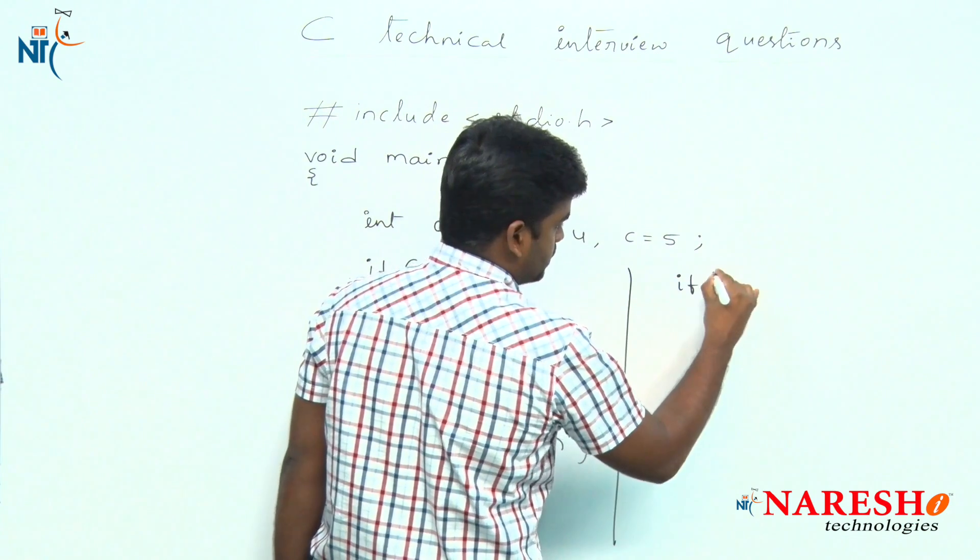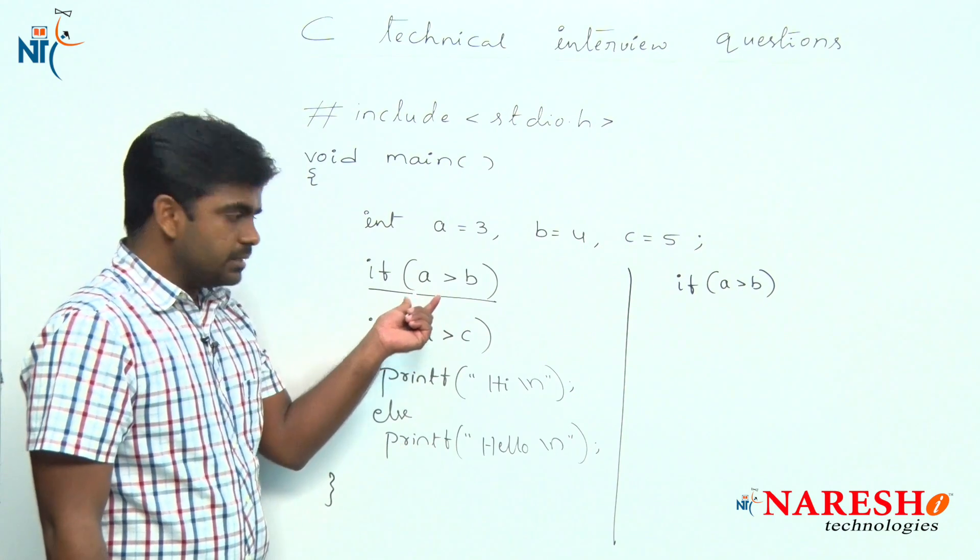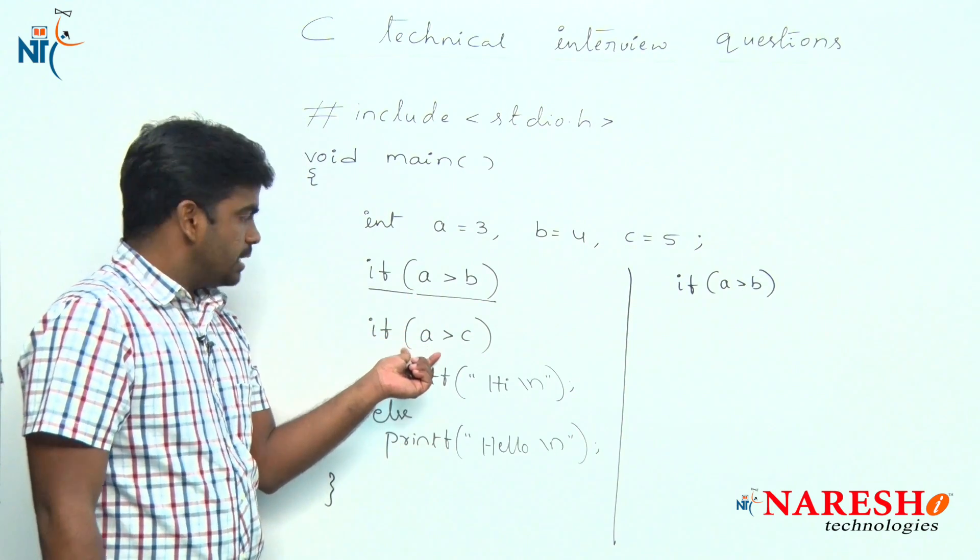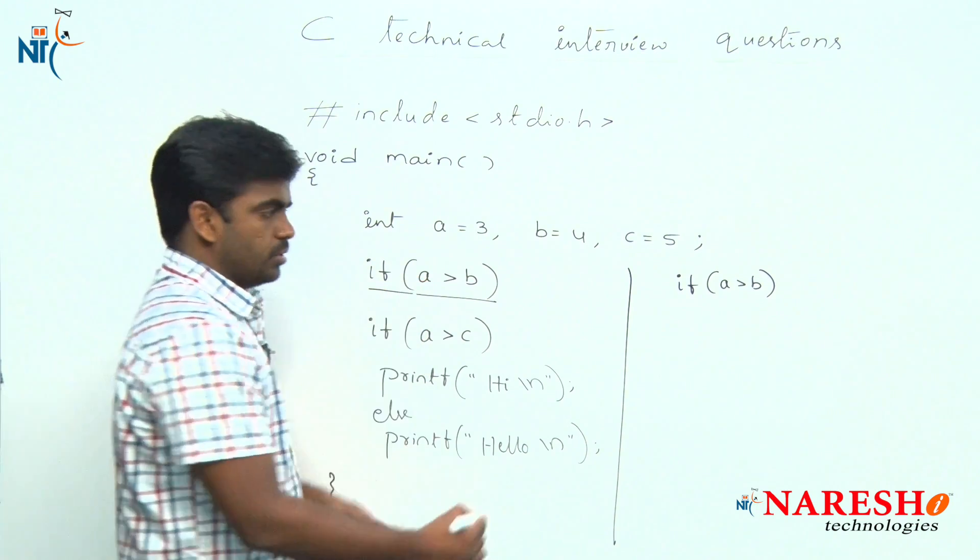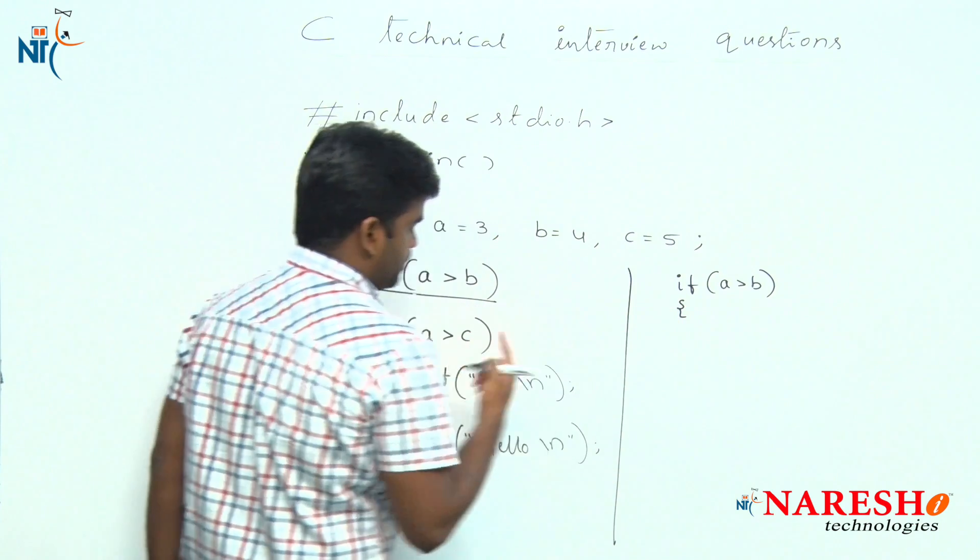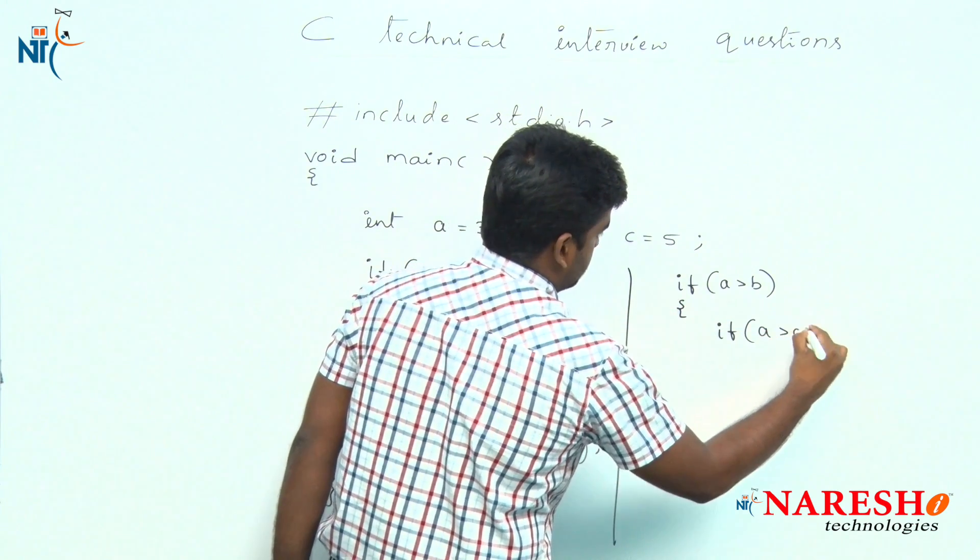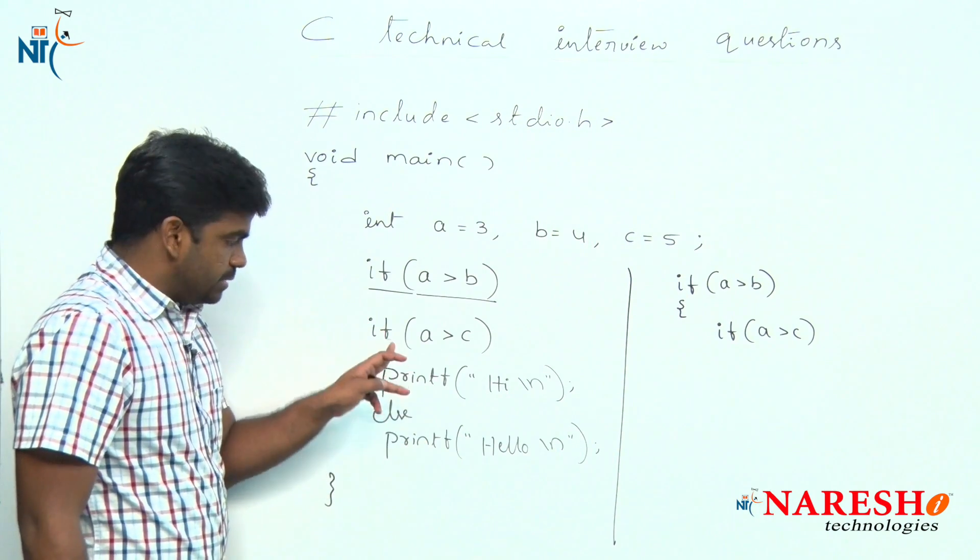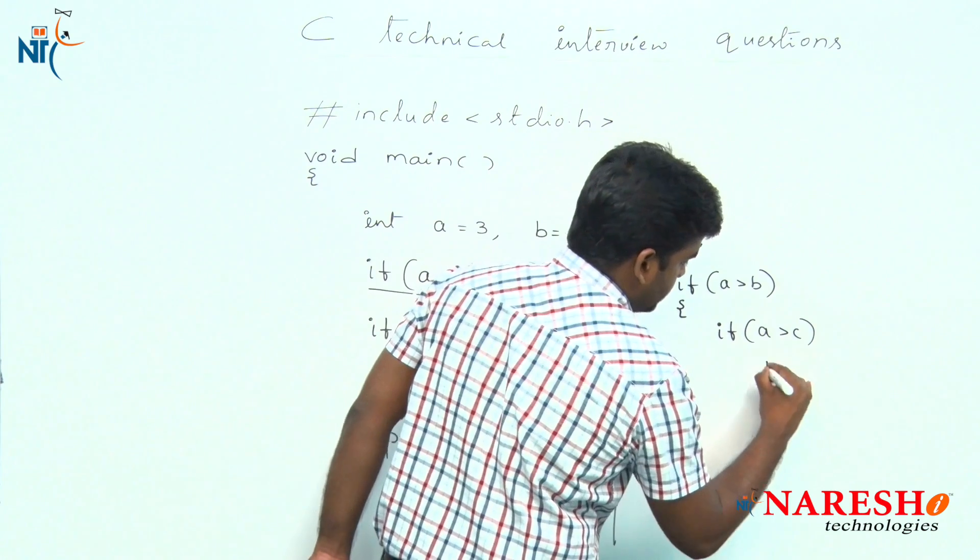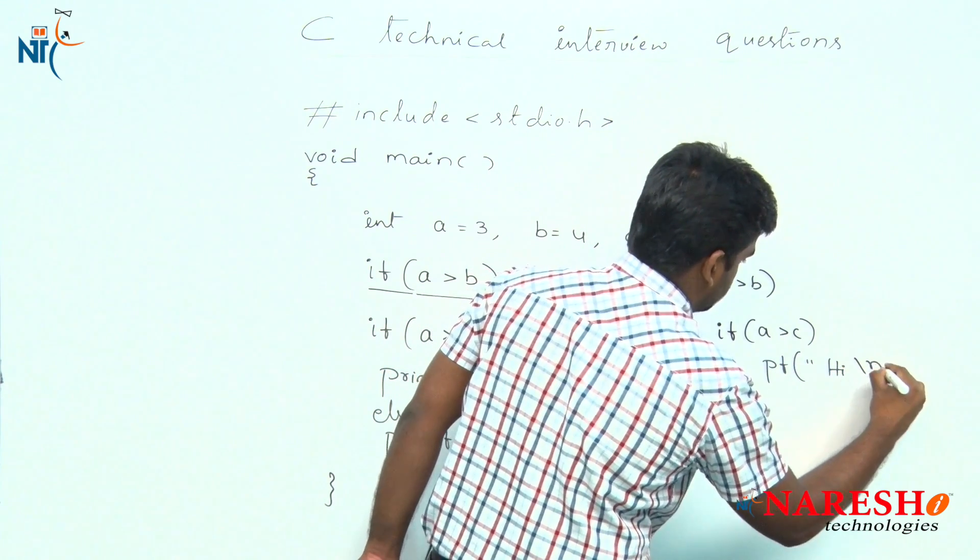If a is greater than b, this comes under this if block, nothing but this is the statement of this if block. Here brace, it is a nested if inside - if a is greater than c, and this statement is the if block statement. This one is a printf, a message is 'high'.